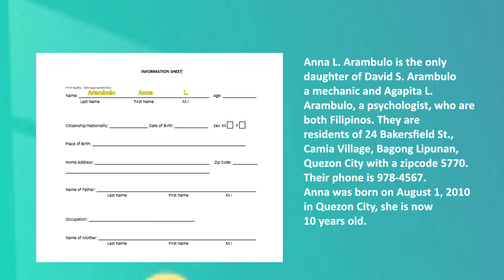Now, let's go back to the information sheet. Age — Ana Arambolo is 10 years old. Let's write it in number form. The citizenship or nationality indicates whether Ana is a Filipino or of another nationality. Ana is a Filipino, so let's put it in the blank. Now let's go to the date of birth — indicate the month, the day, and the year when Ana was born. Let us write August 1, 2010. For the sex, check the appropriate box. Ana is a girl; therefore, check the box F, which is female. For the place of birth, let us write where Ana was born — Quezon City.